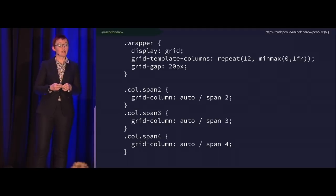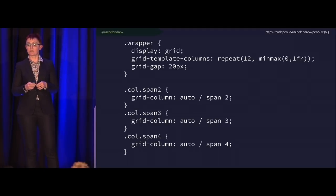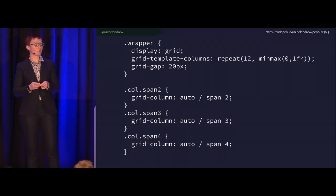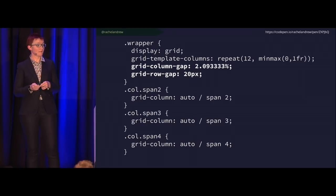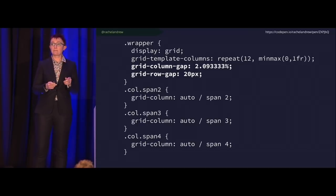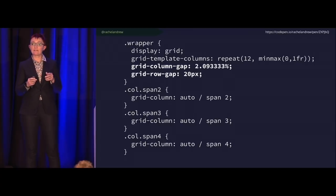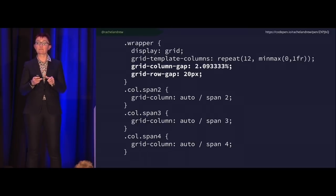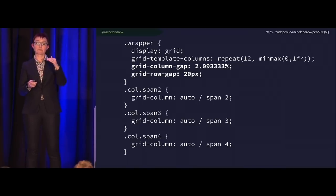This is all we need for a 12-column grid with CSS grid — set up tracks, then specify how many tracks things span. If you want percentage gaps instead of fixed-width gaps, you can still have those and use FR units for the rest. The main reason to use percentages in grid is if you're fitting grid components into a layout where you've already got other layout types like floats or flexbox, to keep everything lined up.